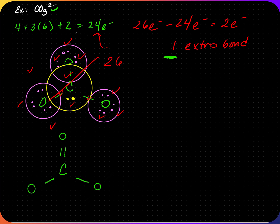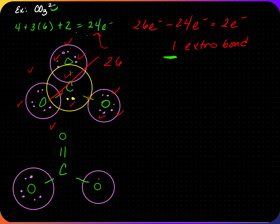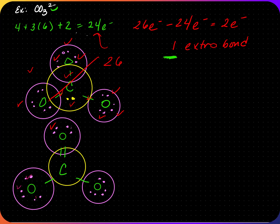Again, I'm going to apply the octet rule. The two singly-bonded oxygens each have two electrons from the bond, so each needs three more pairs or six electrons. The double-bonded oxygen has four electrons from the bond, so it only needs two more. The central carbon already has eight electrons from the bonded pairs. Counting all electrons gives twenty-four, so this is the correct structure for CO₃²⁻.